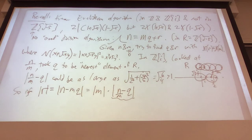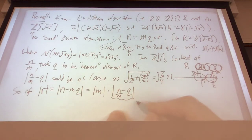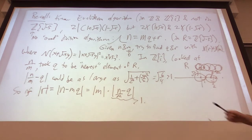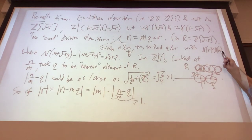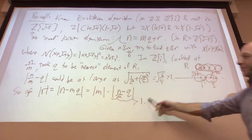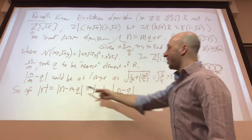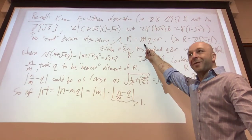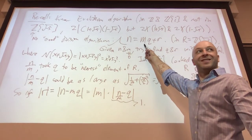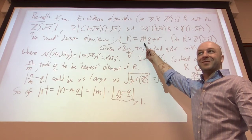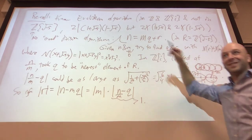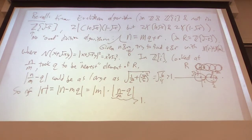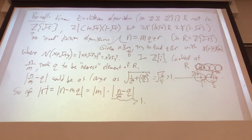The point is this distance is bigger than 1. So we can't always make the norm of R strictly smaller than the norm of N. When we do this division algorithm, we don't get a remainder smaller than the thing you divided by.